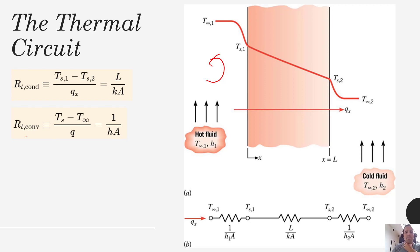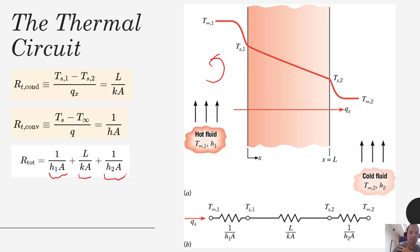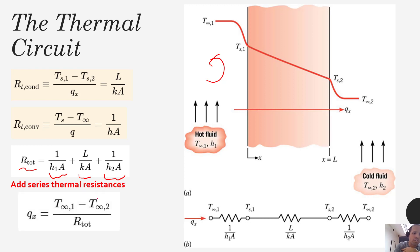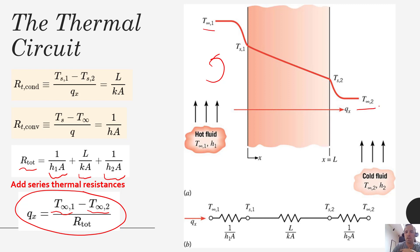When these thermal resistances are in series we can just add them together. So here we have our convective thermal resistance, our conductive thermal resistance, and our other convective thermal resistance. We add those series thermal resistances together to get our total thermal resistance, and then we can express our total rate of heat transfer in the x direction using just the ambient temperatures on each end.